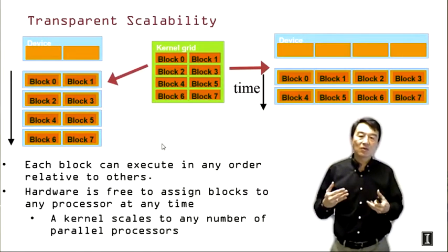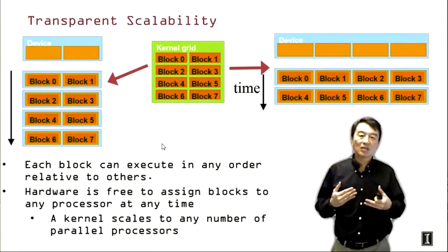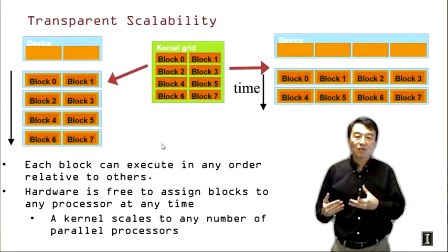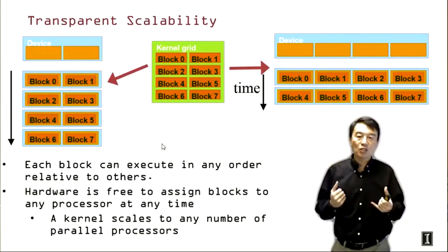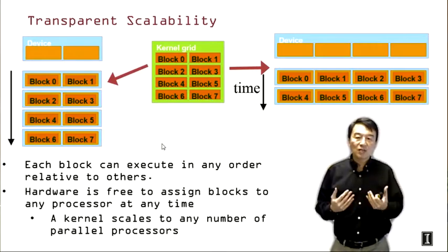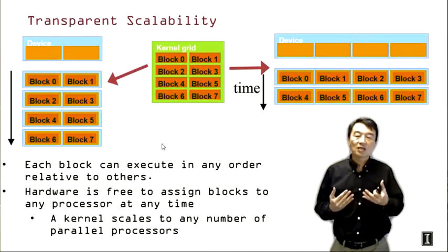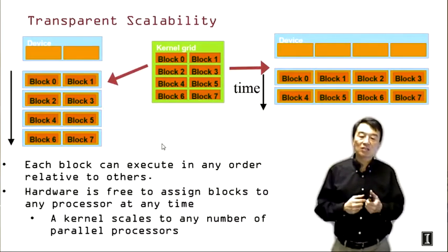We can choose to execute thread block zero in parallel with thread block one, or thread block seven in parallel with thread block two. In some cases we could even do thread block seven ahead of thread block two. This gives us a lot of flexibility simply because the computation of different thread blocks cannot interact with each other in CUDA. The hardware, with this freedom, can choose to schedule thread block execution in any way that is most beneficial to overall performance. This demonstrates the benefit of transparent scalability.